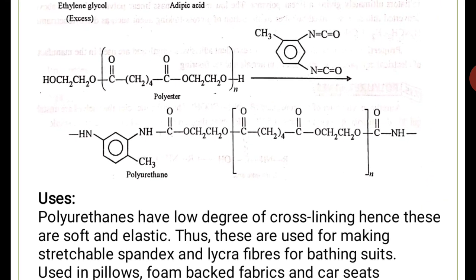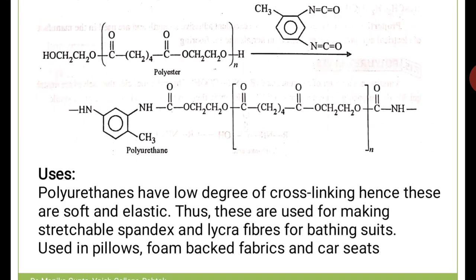The properties of polyurethanes: they have a low degree of cross-linking, which is why they are soft and elastic. They are used for making stretchable Spandex and Lycra fibers — hosiery, Lycra leggings, socks, and bathing suits where high stretching is needed.